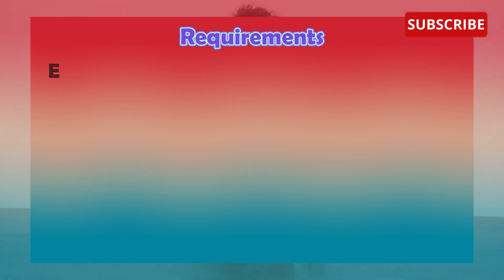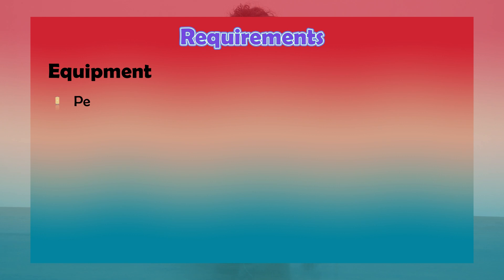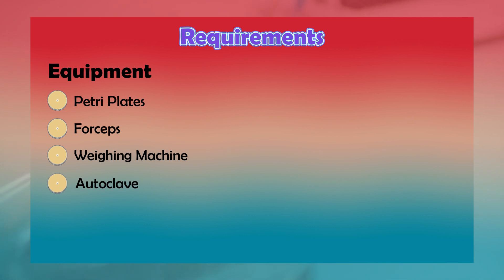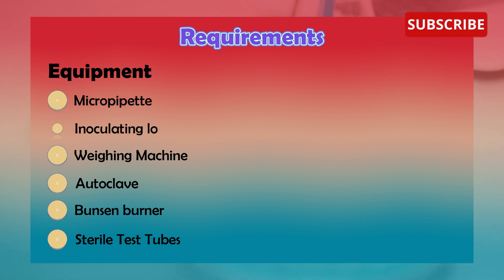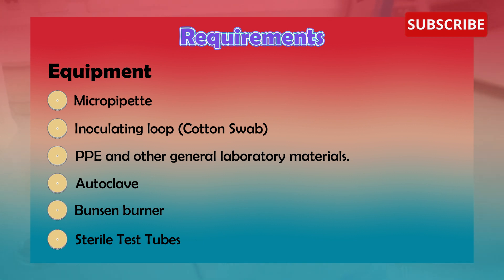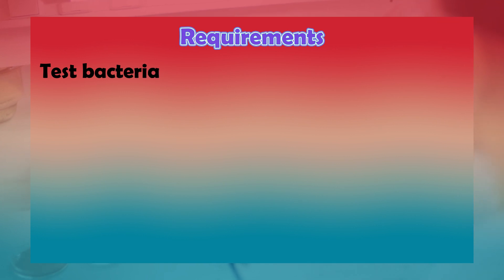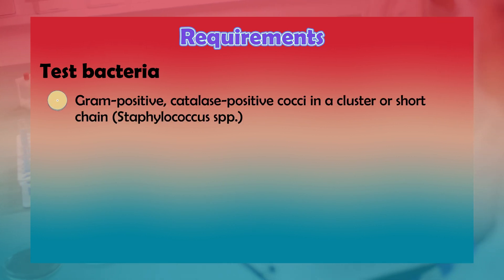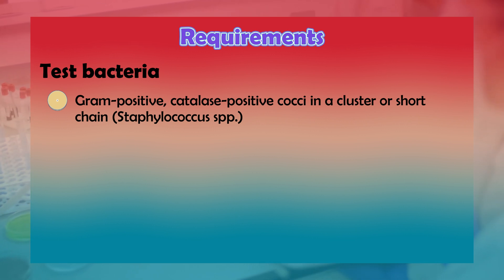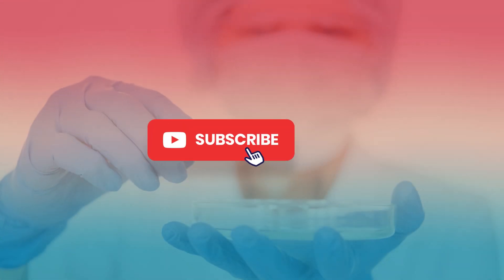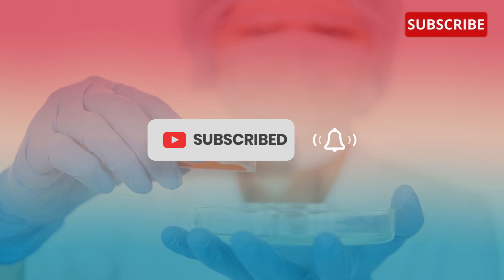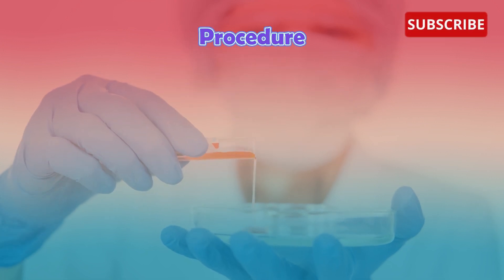The equipment you will need for this test includes: petri plates, forceps, a weighing machine, autoclave, Bunsen burner, sterile test tubes, micropipette, inoculating loop or cotton swab, personal protective equipment, and other general laboratory materials. The test organisms to consider are gram-positive, catalase-positive cocci in a cluster or short chain — Staphylococcus species including Staphylococcus aureus and Staphylococcus saprophyticus.